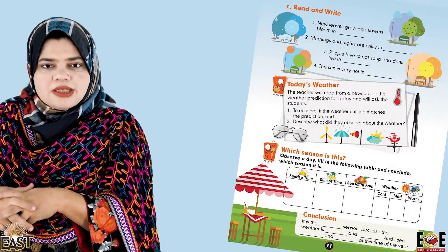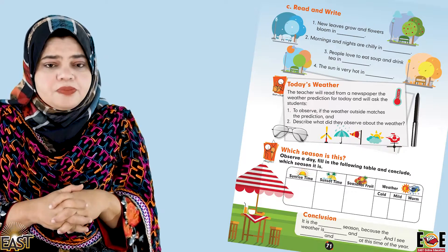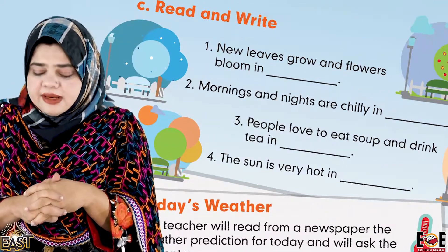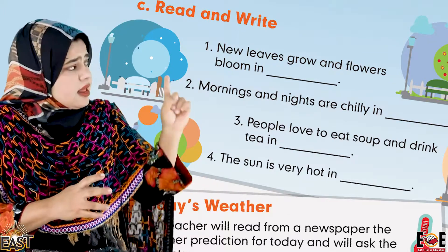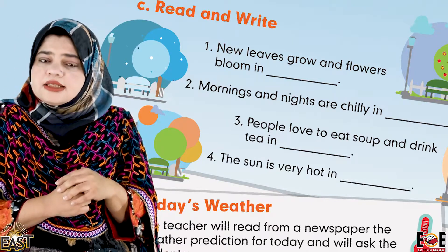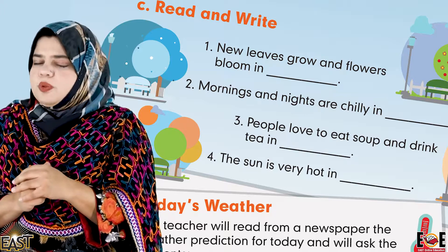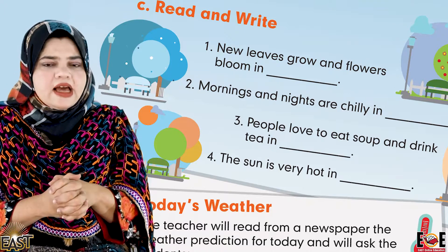Toh janab, is chapter ke different activities aur different exercises aayi hain jinhe hame complete karna hai. Toh janab complete karte hain saath mein. Let's open our book, page number 71. Ji janab, 71 hamare paas maujud hai. Practice ki exercise C hamare paas aayi hai jo hame aaj complete karni hai. Dekhte hain bhai, kya aaj isme kya maujud hai. Read and write — humne pahle sentences ko dekha, aur isme kuch blanks di gayi hain. Incomplete sentences ko complete karna hai.